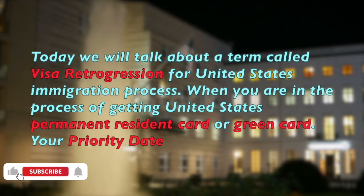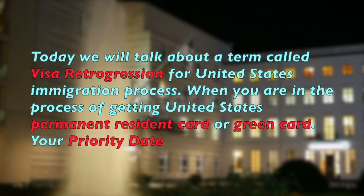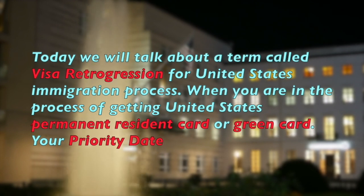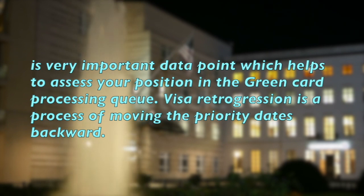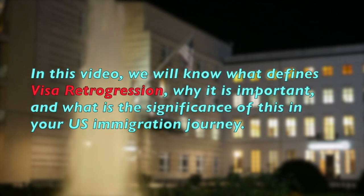Today we'll be talking about the term called visa retrogression for the United States immigration process. When you're in the process of getting a United States permanent resident card or green card, your priority date is a very important data point which helps to assess your position in the green card processing queue. Visa retrogression is the process of moving the priority date backward.